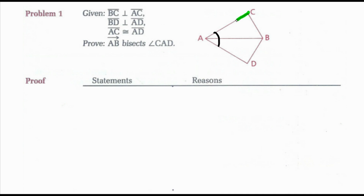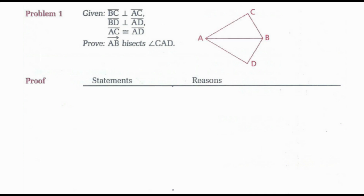In order to show these two angles congruent, notice that they're a part of triangle CAB as well as triangle DAB. So if I can prove triangle CAB is congruent to triangle DAB, then I will have those two angles congruent, and I will have ray AB bisecting angle CAD. Looking at my givens,